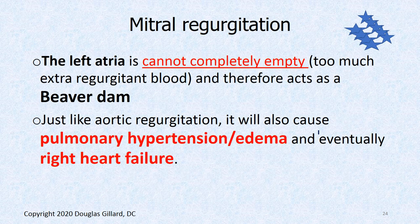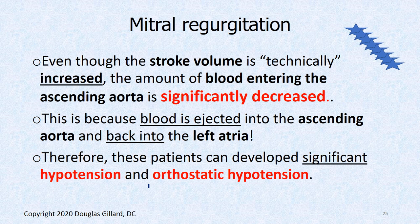Both mitral and aortic valve regurgitation patients will develop valvular cardiomyopathy. Aortic regurgitation patients will have normal blood pressure; mitral valve regurgitation patients will have hypotension and all the sequelae that go with that. The overfilled left atrium can't completely empty — it acts as a beaver dam and causes pulmonary hypertension, pulmonary edema, and right heart failure. Even though stroke volume is technically increased, the amount of blood entering the ascending aorta is significantly decreased because blood is escaping into the left atrium.